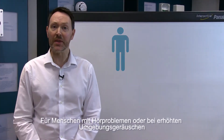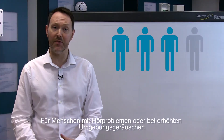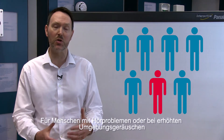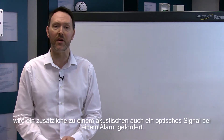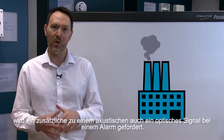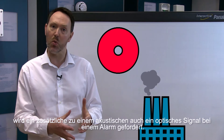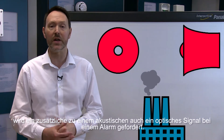Welcome to this video about our EN54 Part 23 compliant visual alarm devices, or VADs. 1 in 7 people in the UK are deaf or hard of hearing, and they, as well as those who work in noisy environments such as factories, require a visual signal as well as an audio warning in the event of an alarm.